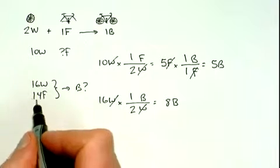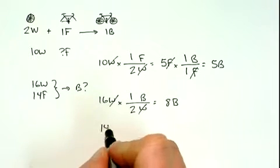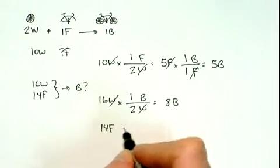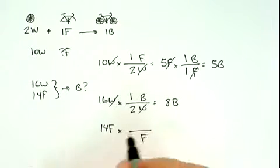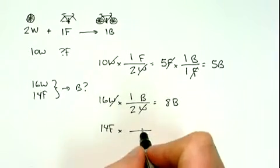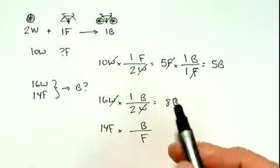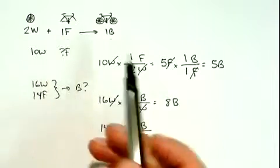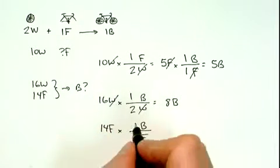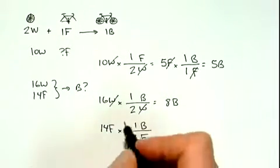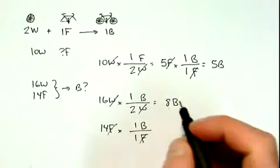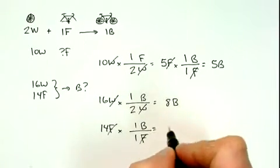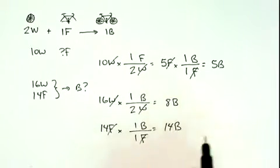Let's then look at the 14 frames. 14 frames times — I'm going to get rid of frames, that goes on the bottom, and get in terms of bicycles. You see it's one to one, so that's what I put in. If I do this math, 14 times one over one is just 14, so I could make 14 bicycles if I used up all the frames.